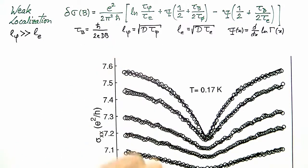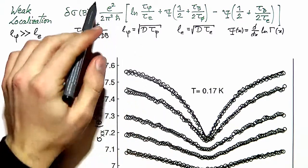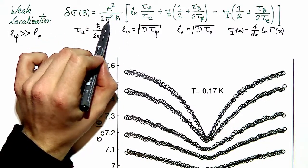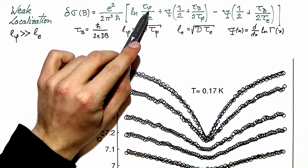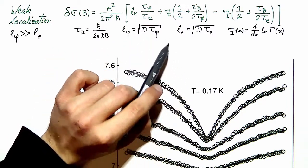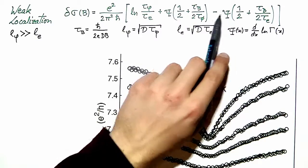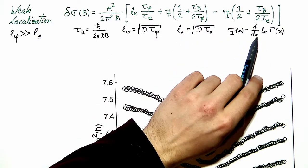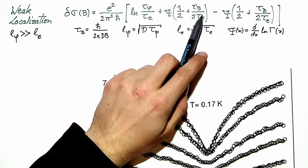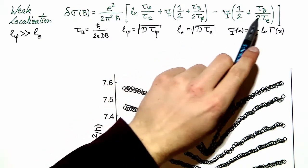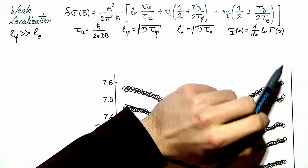We are not going to do this, but let's discuss this equation briefly. The weak localization correction is given by a prefactor with the conductance quantum divided by pi, and we have the log of the ratio of two timescales: the coherence time and the elastic scattering time. The coherence time is related to coherence length by the diffusion constant. We also have the digamma function appearing, which is the derivative of the logarithm of the gamma function, with argument one half plus the ratio of the phase coherence time or elastic scattering time to a magnetic-field-dependent timescale.